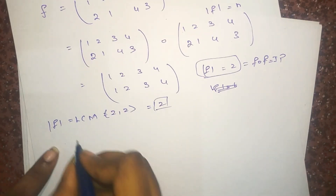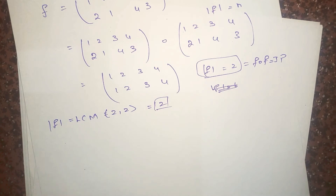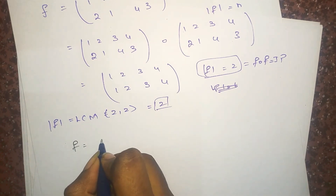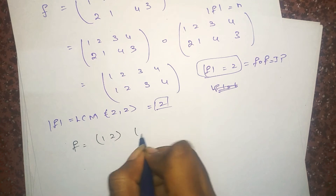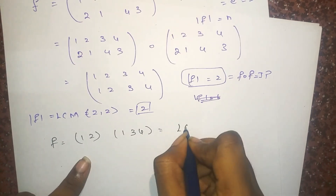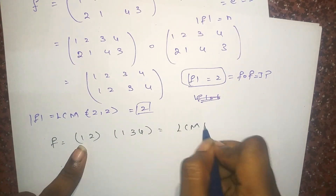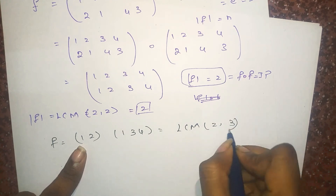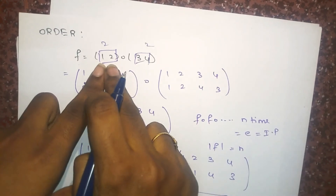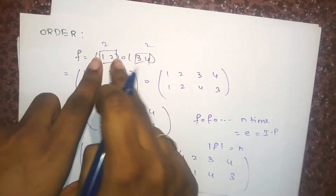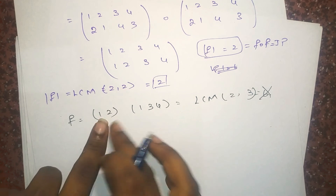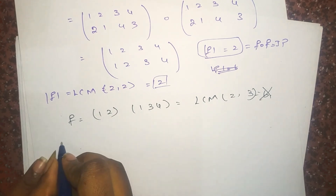Let's take one more example: F to be (1 2)(1 3 4). Many people will find the LCM of 2 and 3 and write it as 6, but this is not the answer. In the previous example the two cycles were disjoint, but here these two cycles are not disjoint.